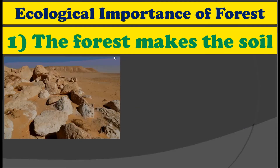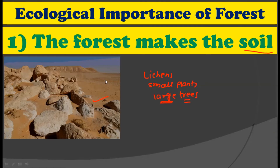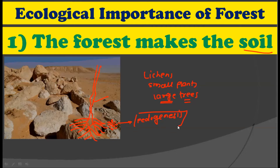The first ecological importance of the forest is that forest makes the soil. As you can see in the picture, this is barren land. On this barren land, if there is a succession — that is, the arrival of small living organisms like lichens, then small plants, and then large trees — these trees not only stand firm on the ground but also their roots grow deep into the soil, cracking hard rocks and breaking them into smaller pieces. These smaller pieces are further divided to form soil. This formation of soil is called pedogenesis.